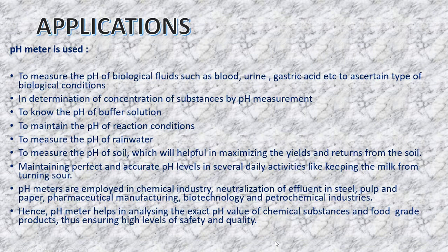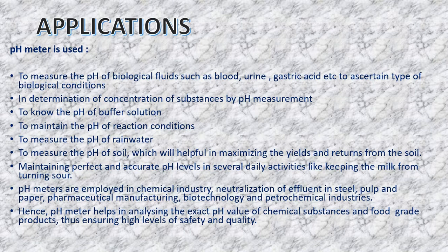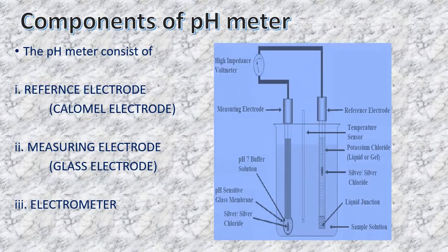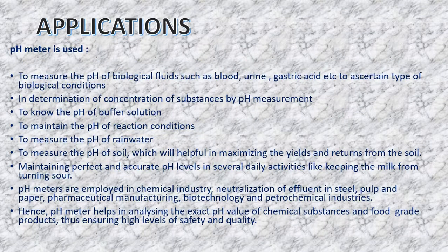In summary, we have gone through hydrogen ion concentration — which we express as pH — what pH is, the relationship between pH and microbial growth, how to measure pH using the pH meter, the components and principle of the pH meter, and its wide applications. That concludes this topic on hydrogen ion concentration and pH measurement. Thank you.